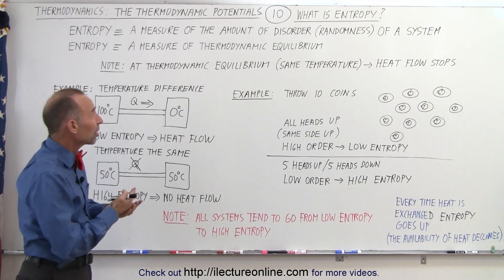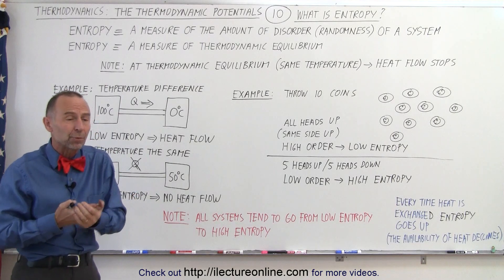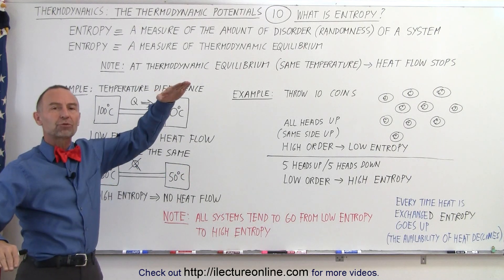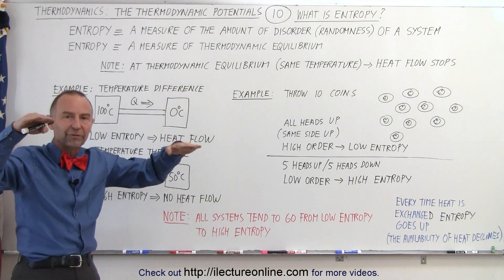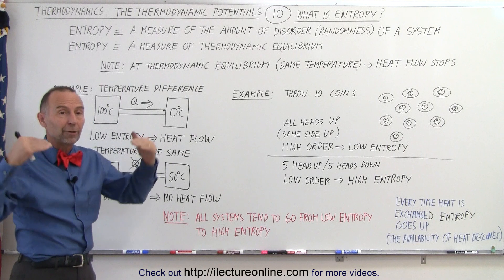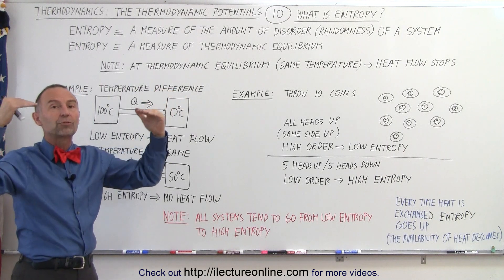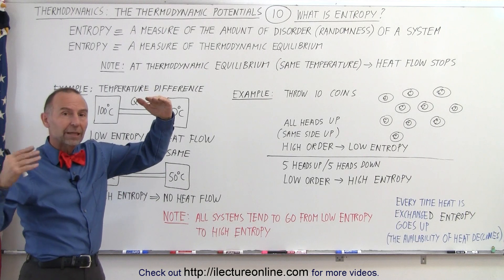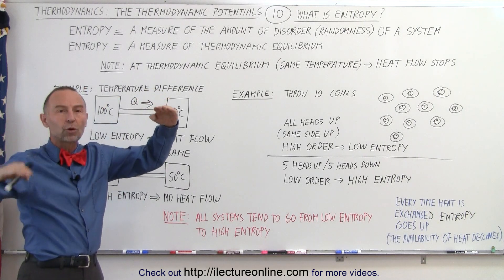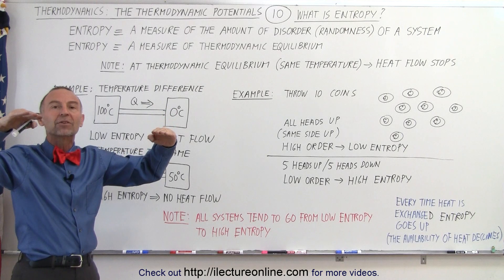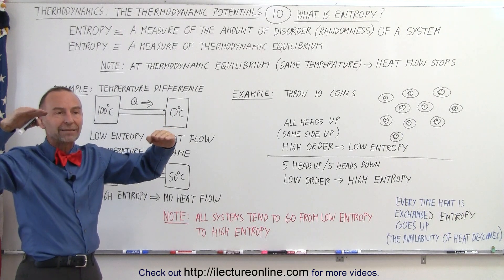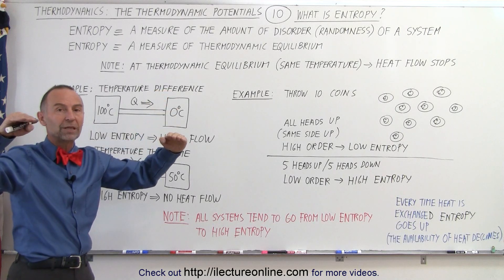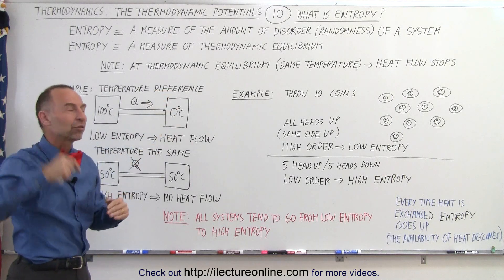What does that mean? Well, we talk about thermodynamic equilibrium, which means systems will tend to go from a variation in temperature to a non-variation in temperature — in other words, from temperature differences to temperatures being the same. Whenever there's a temperature difference, that will cause heat to flow from where it's hot to where it's cold until the temperature ends up being the same. So from a temperature difference, that means low entropy; we go to a state where temperature is the same, and that means high entropy.